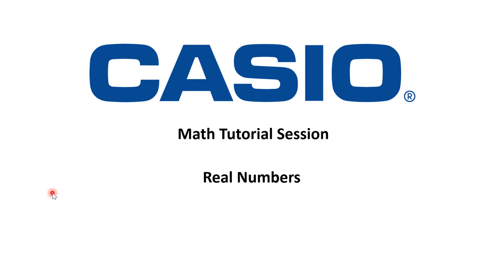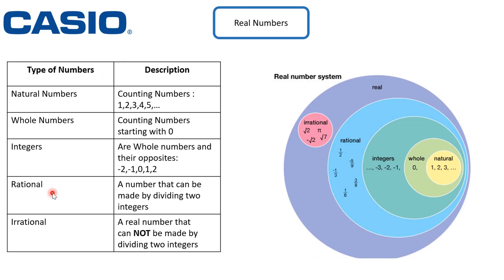Welcome to Casio Middle East tutorial session. Our lesson today is about real numbers. Real numbers are divided into categories: natural numbers, whole numbers, integers, rational numbers, and irrational numbers.